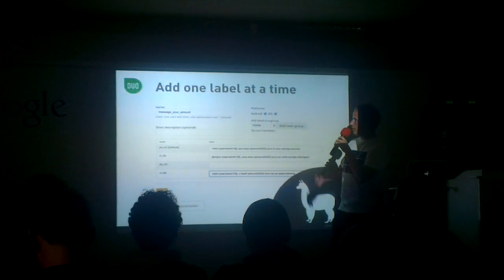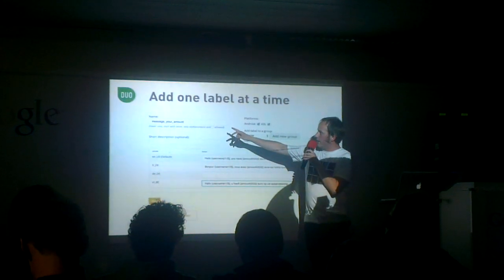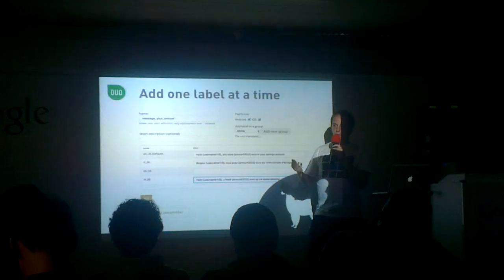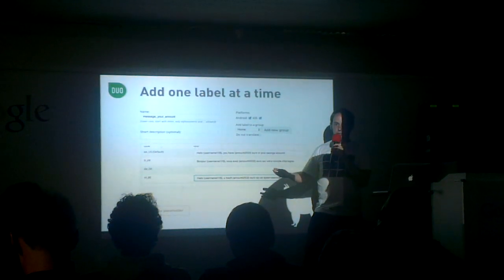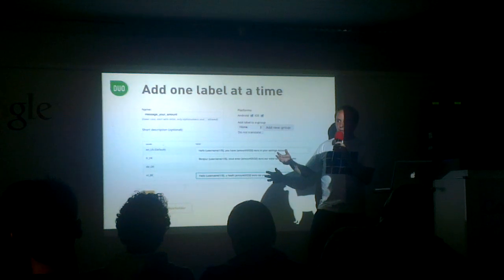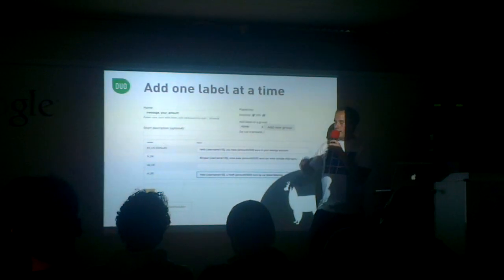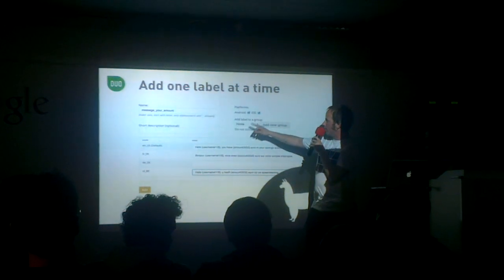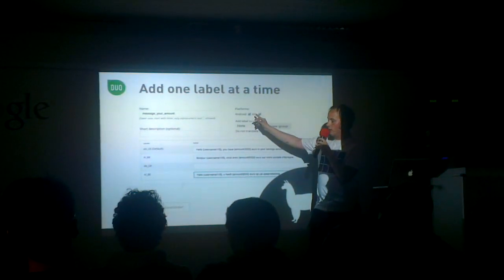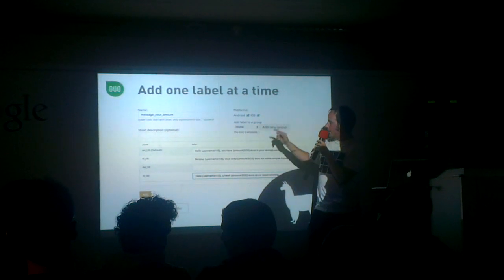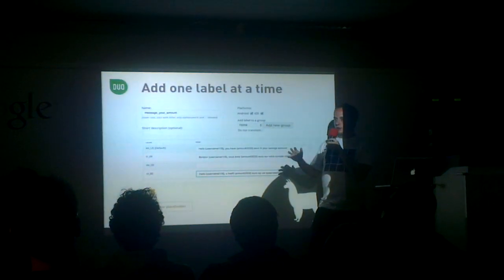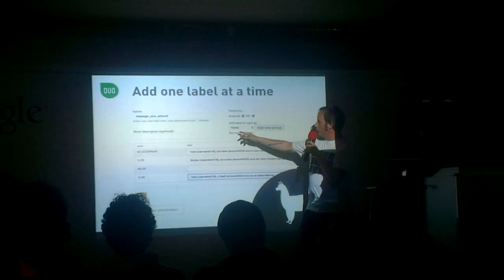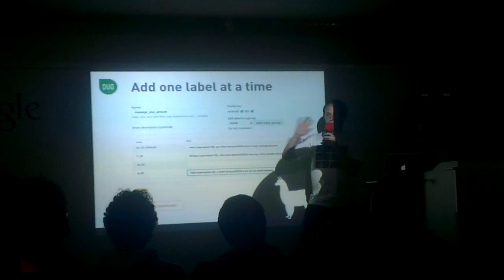Of course, more needs to be done during development, like adding a label. So you can also add one label at a time. You can add a short description, which makes it really easy for other people such as translators to know where the label is going to be used and what it means. You can specify whether you only need it in Android or for both platforms, and you can add it to groups — for example, a group called 'home' for everything on your home screen.